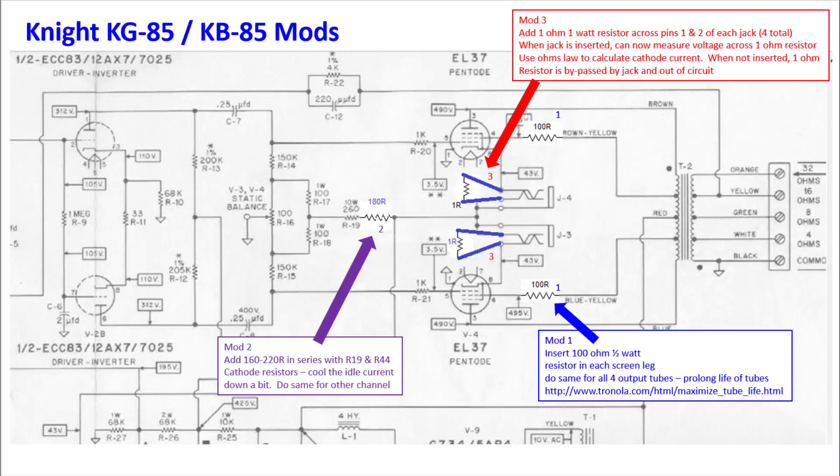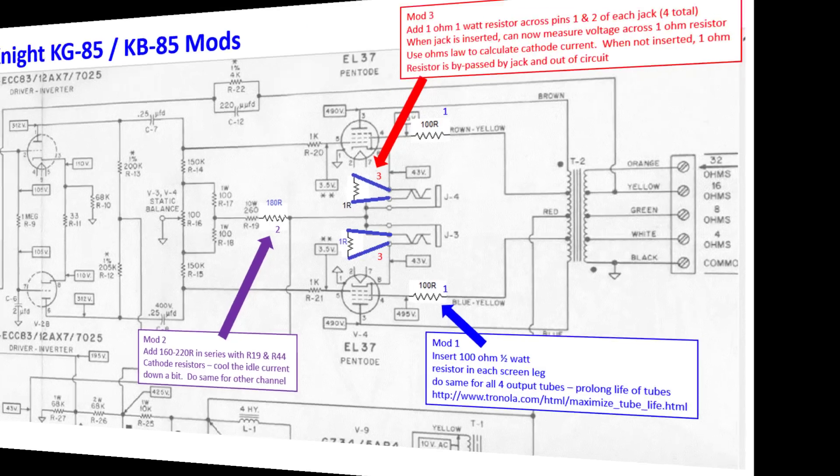If you happen to own a Knight KG-85 or KB-85, one of those is the kit version, the other is the factory built version, so they're basically the same amplifier. Here's a few modifications you could make to potentially extend the life of your tubes and make the amp a little easier to bias. So if you're interested in that, stay tuned.